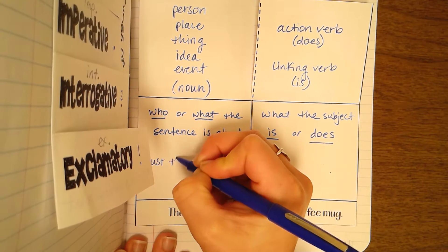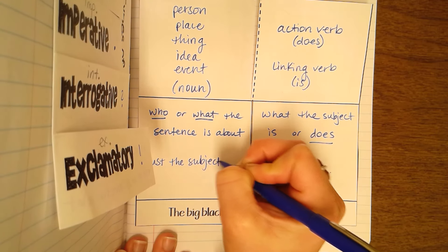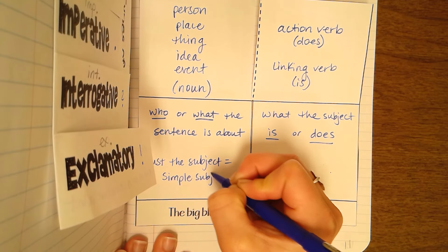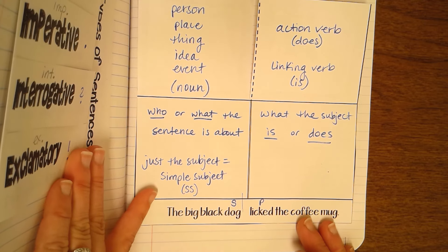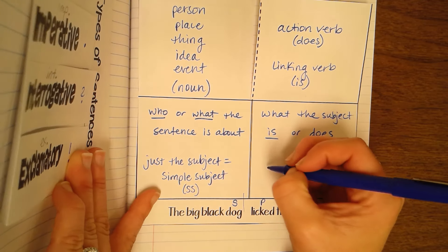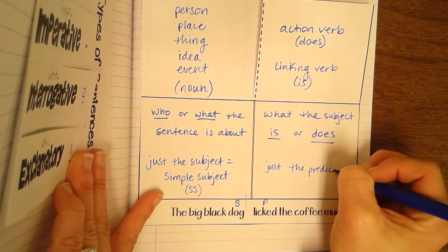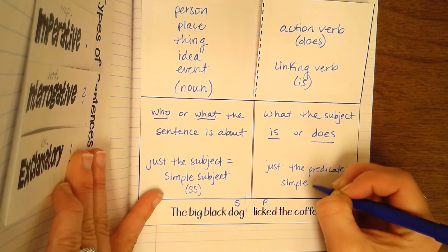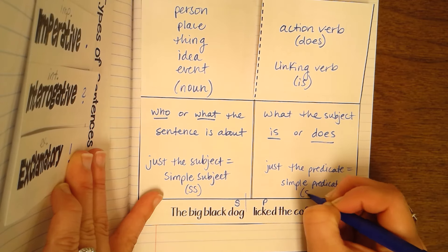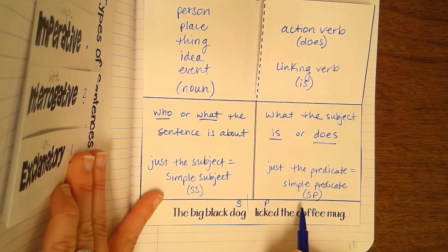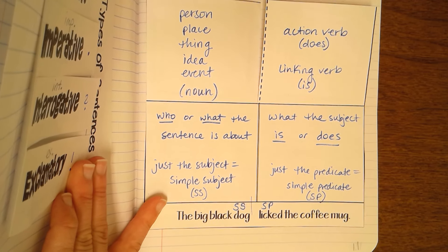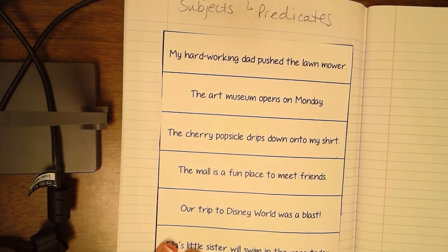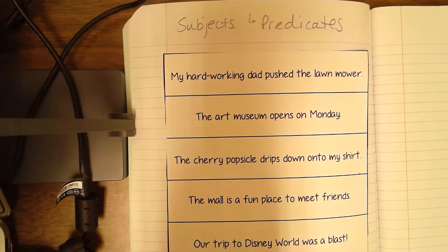When you just find the subject and the predicate, we call that the simple subject and the simple predicate. Just the subject is the simple subject — you might see that labeled SS sometimes. Just the predicate is called the simple predicate, labeled SP. So we can actually label these two SS and SP. Now I'm going to have you flip over to the second page, where we are just going to be labeling the simple subject with SS above it and the simple predicate with SP above it.